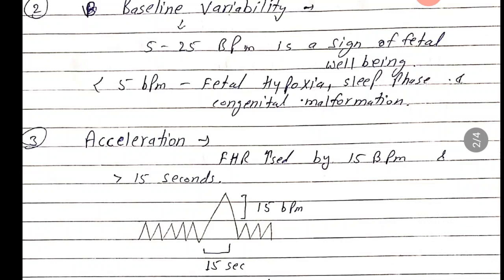If baseline variability is less than 5 beats per minute, it may indicate fetal hypoxia, a sleeping phase, or congenital malformation. Now third, let's see acceleration: fetal heart rate increases by 15 beats per minute and lasts for more than 15 seconds.